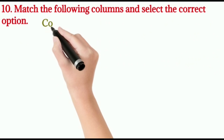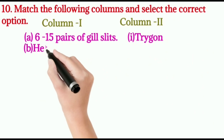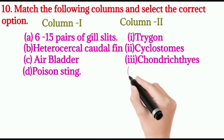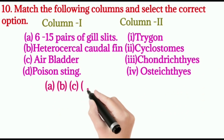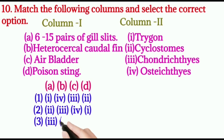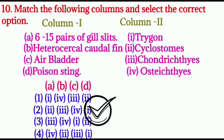Question number ten: match the following columns. Column 1 — A: 6 to 15 pairs of gills, B: heterocercal caudal fin, C: air bladder, D: poison sting. Matching: 6 to 15 pairs of gills is present in Cyclostomata (circular mouth); heterocercal caudal fin is present in Chondrichthyes; air bladder is present in Osteichthyes; poison sting is present in rays. The right option is 2.